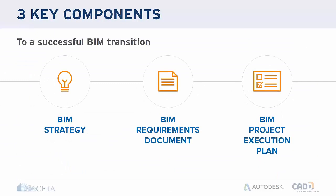There are really three key components of a set of BIM requirements. The first is an overall strategy, where you define your goals and objectives. The second is the BIM requirements document itself, which is the keystone — your central document that everything is built off of. The third is your BIM execution plan, which you use on a per-project basis.